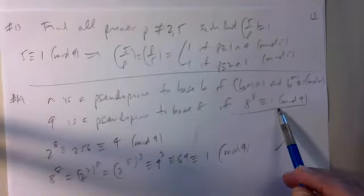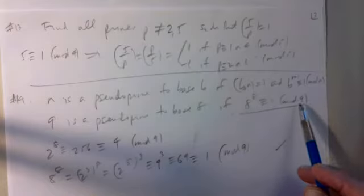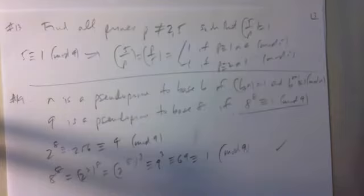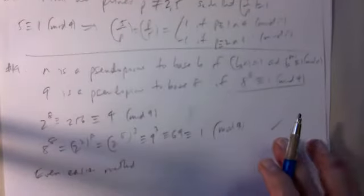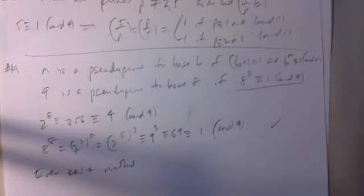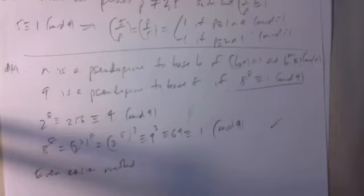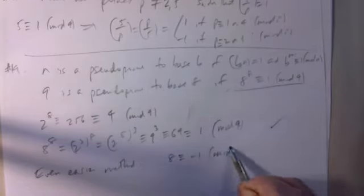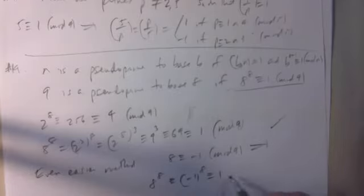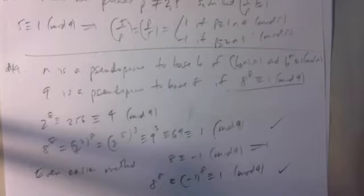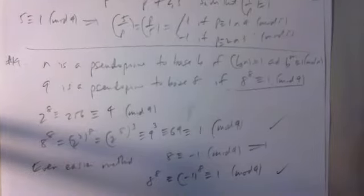A student asks whether for Carmichael numbers you also need to prove the congruence for the factors of n. The professor clarifies that this problem is for a pseudoprime, not a Carmichael number. Then offers an even easier proof: since 8 ≡ −1 mod 9, we have 8^8 ≡ (−1)^8 = +1 mod 9. That's the shortest proof there is.